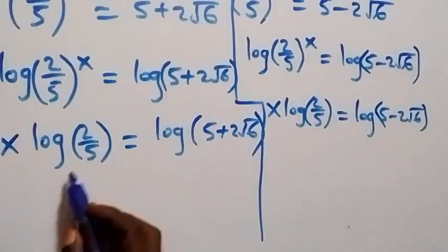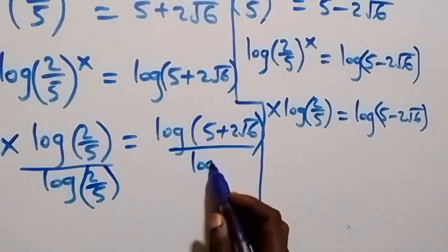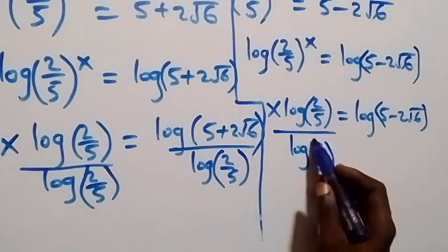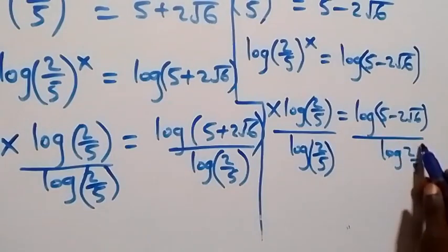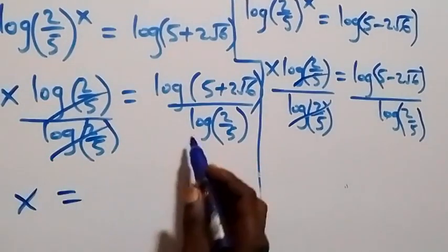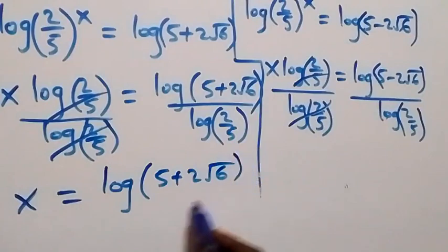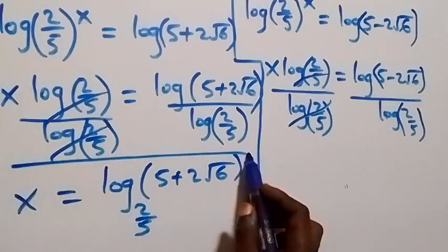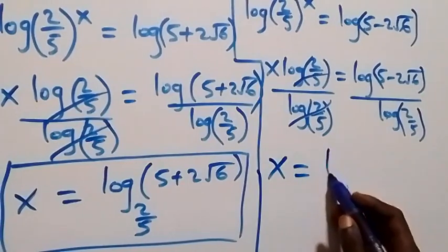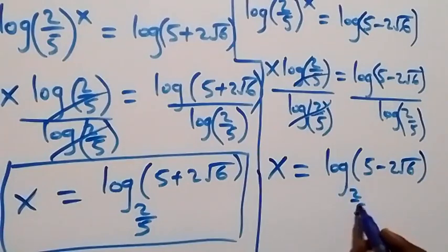We can now divide both sides by log(2 over 5). The log terms cancel, leaving x on each side. Applying the change of base rule, we get x equals log(5 plus 2 root 6) to base (2 over 5) as one value of x, and x equals log(5 minus 2 root 6) to base (2 over 5) as the other. These are the two solutions to the given problem.